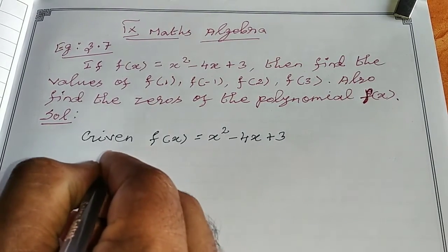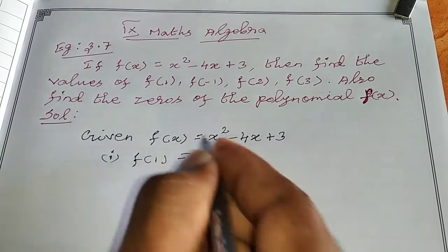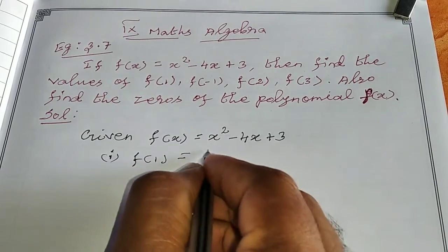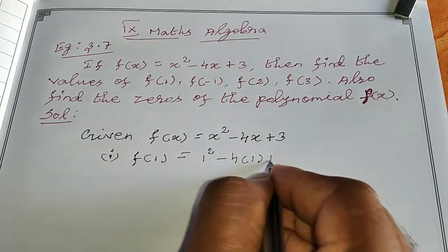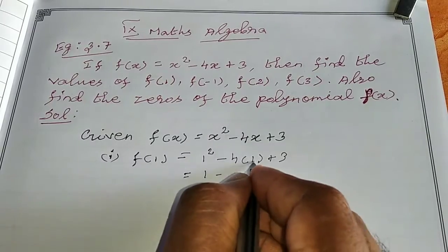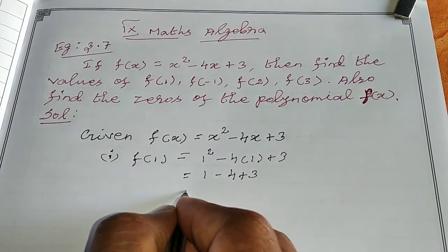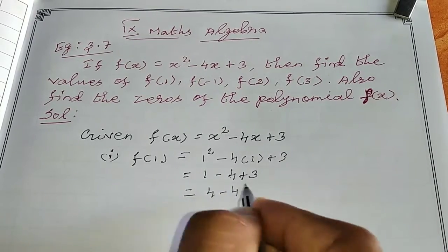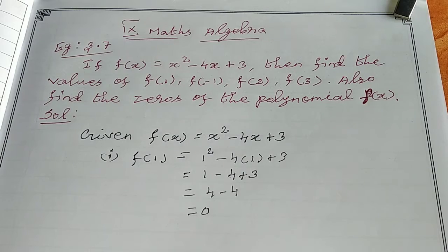First, find f(1). Apply x equals 1 into f(x) = x² - 4x + 3. So f(1) = 1 squared minus 4 times 1 plus 3, which equals 1 minus 4 plus 3. That gives us 4 minus 4, which is equal to 0. So f(1) = 0.